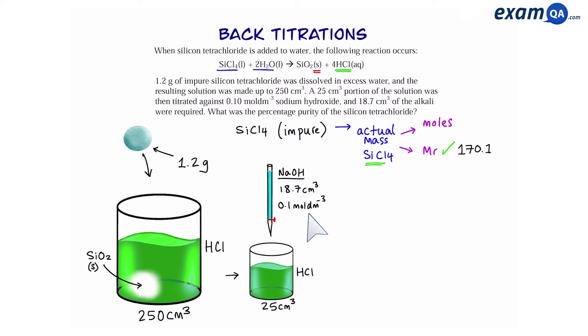Remember we're trying to find out the moles of silicon tetrachloride. So we can work out the moles of sodium hydroxide and that's going to be done by doing concentration times volume divided by 1000. That gives us 1.87 times 10 to the power of minus 3. Now we should know that when sodium hydroxide reacts with hydrochloric acid, that reaction is a 1 to 1 ratio. Meaning that the moles of hydrochloric acid is also going to be the same.